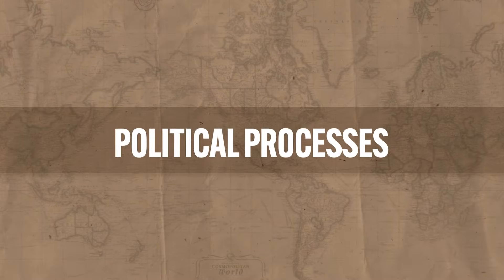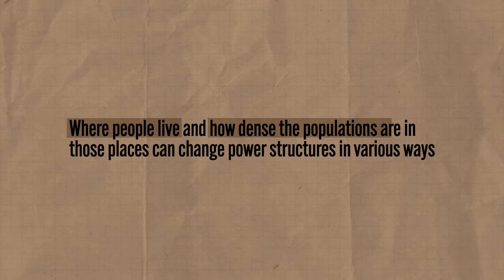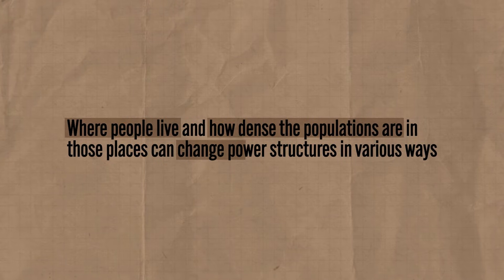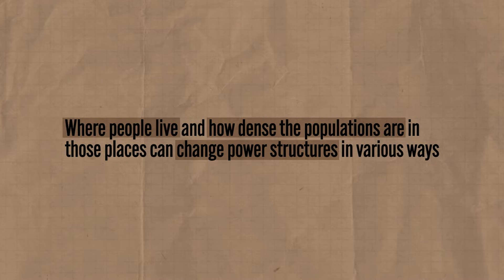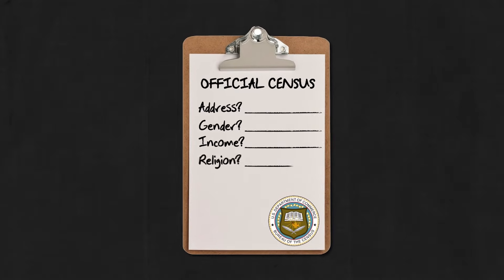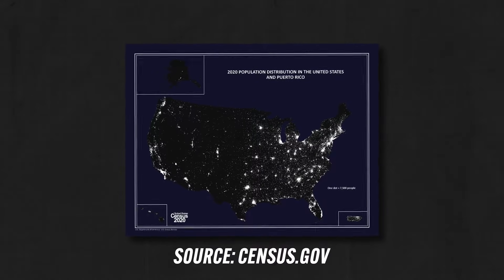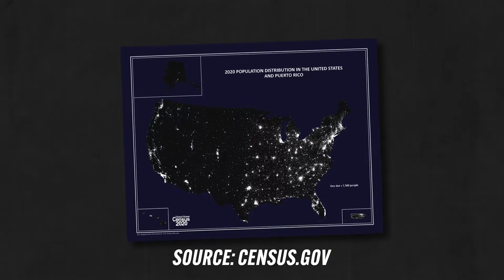First, population distribution and density affect political processes. In other words, where people live and how dense those populations are in those places can change power structures in various ways. For example, here in the United States the federal government is constitutionally mandated to take a census every 10 years. That means every decade citizens are required to report where they live, their gender, their income, their religion, and so on. One of the main reasons they collect all that data is to find out where people live — the population distribution.